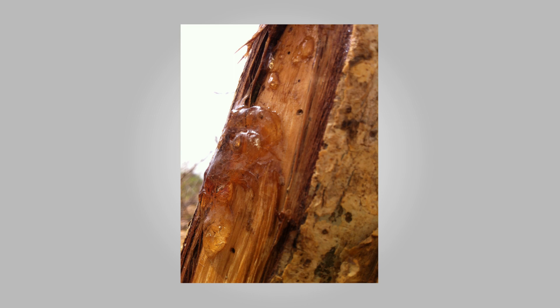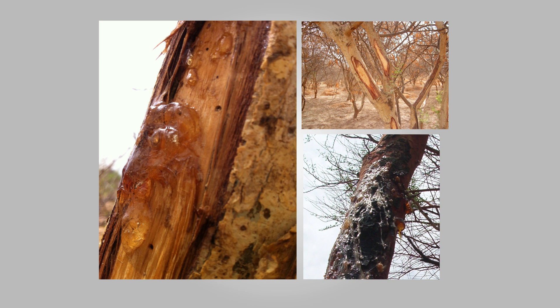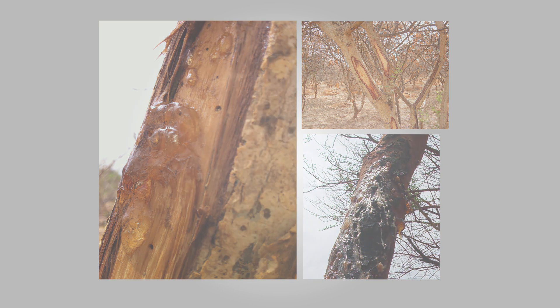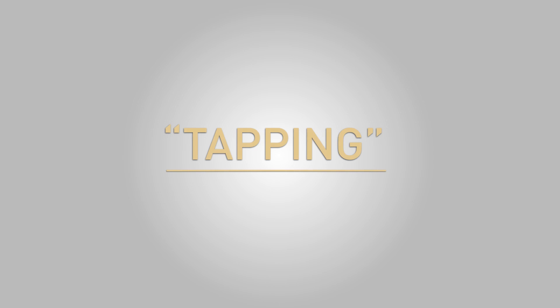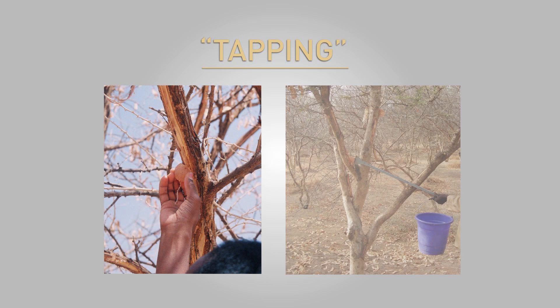These gums are hardened sap collections that exude from the plant or tree. Incisions, hole drilling, or natural exudation are the traditional ways of accessing this gum. This is referred to as tapping. Once the gum has exuded or leaked out, it dries and is gathered by harvesters, also known as tappers, for sale and distribution.